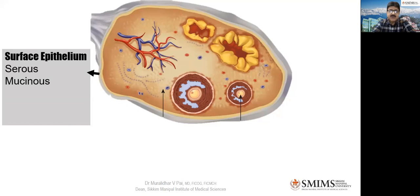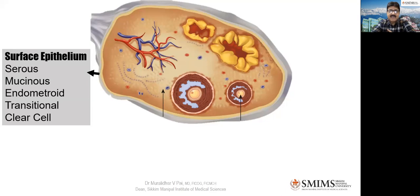If the tumor takes cervical epithelium, it will be mucinous carcinoma. If it is endometrial variety, it will be endometroid. Bladder type epithelium gives transitional cell tumors. Around kidneys gives clear cell tumors, and then there will be mixed variety. In each one of them, there will be benign, borderline, and malignant varieties.